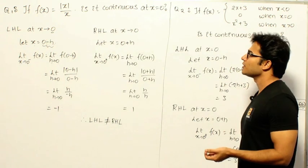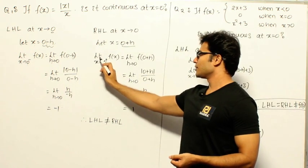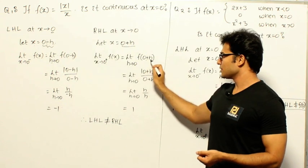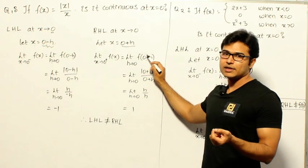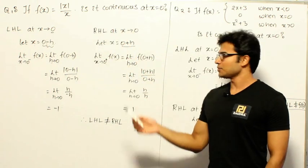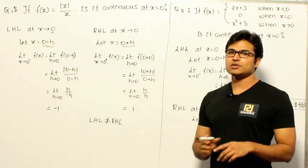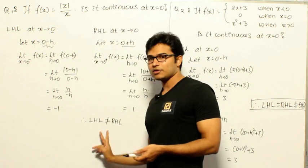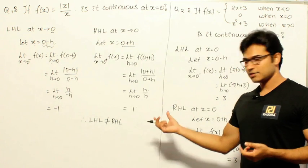Now let's find the right-hand limit. Limit as x → 0⁺ of f(x): substitute 0 + h in place of x. Since we are at point 0, we use 0 + h (or a + h if the point were a) for a small value of h. Substituting into |x|/x gives |0 + h| / (0 + h). Since h is already positive, this becomes h/h = 1. The left-hand limit is −1 and the right-hand limit is 1 — they are not equal, so the function is not continuous.